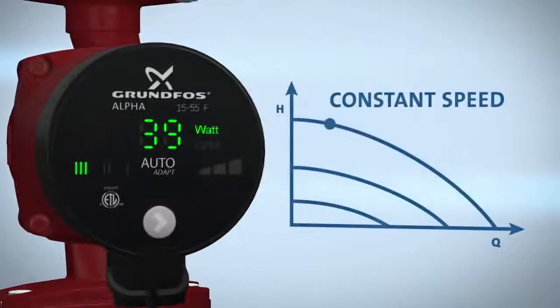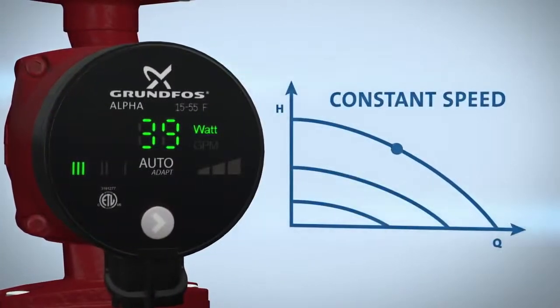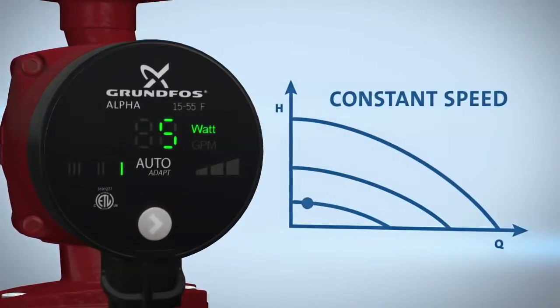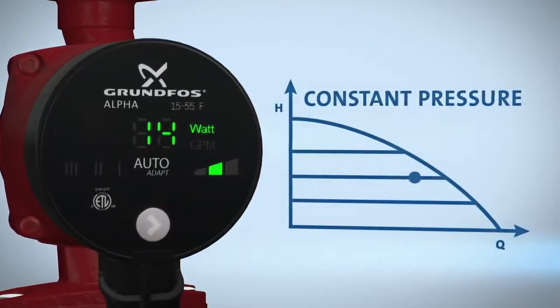For more control, set your Alpha to high, medium, and low fixed speeds or select any of the three constant pressure settings.